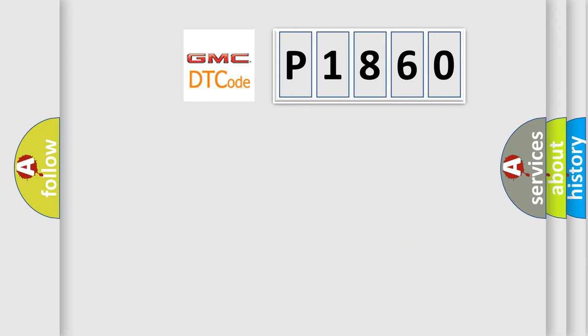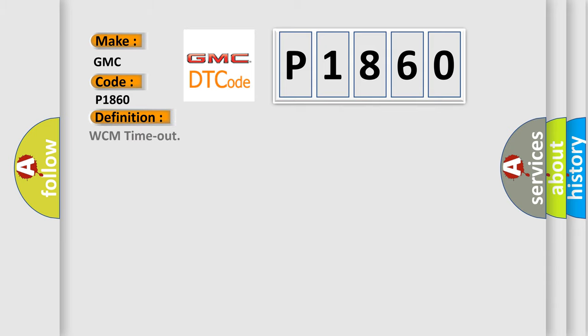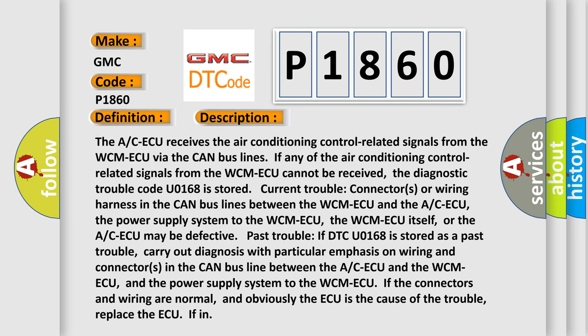So, what does the Diagnostic Trouble Code P1860 interpret specifically for GMC car manufacturers? The basic definition is WCM timeout. The ACAQ receives the air conditioning control related signals from the WCM AQ via the CAN bus lines. If any of the air conditioning control related signals from the WCM AQ cannot be received, the diagnostic trouble code U0168 is stored.